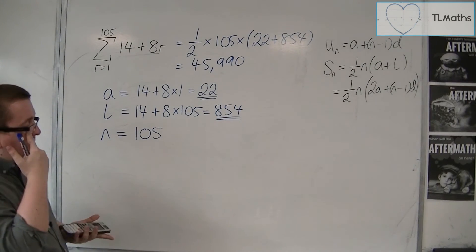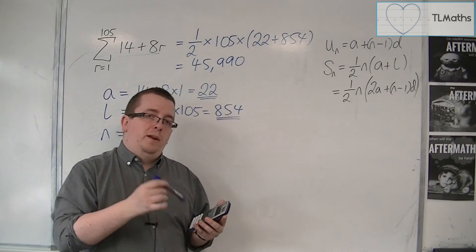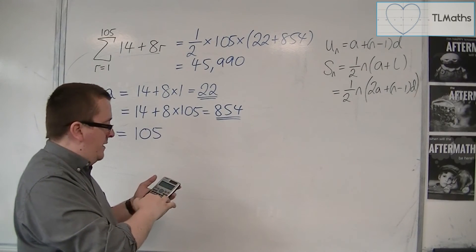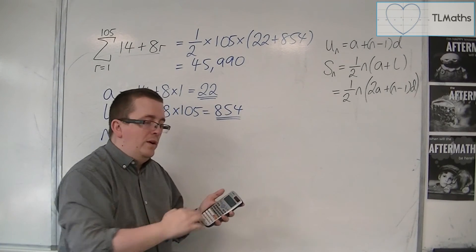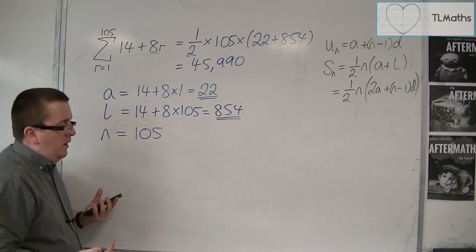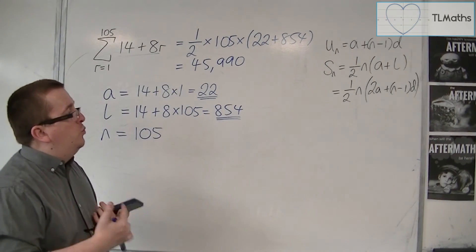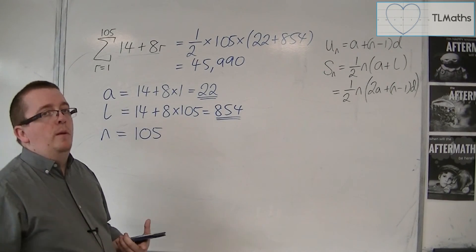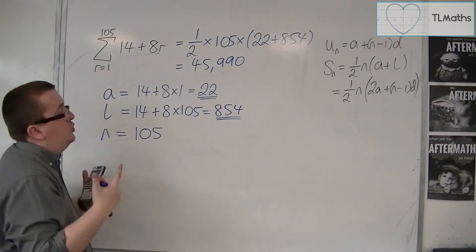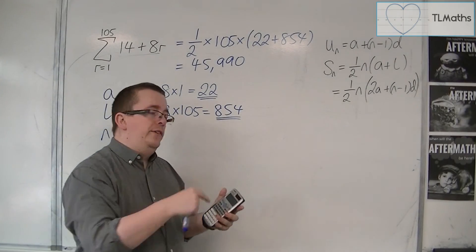If you have one of the silver Casios — the FX991ES+ — it has a sigma notation button in the top right-hand corner. You can use that much like the integral button. In general, I would only use this to check, and I would show as much working as needed. I would use this method to show the required working to get to the answer, and then check your answer using your calculator.